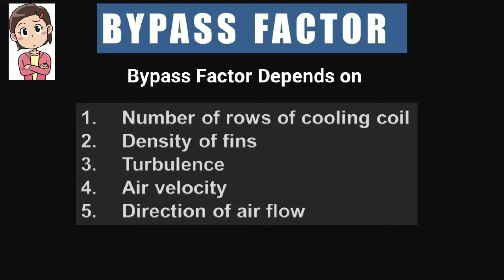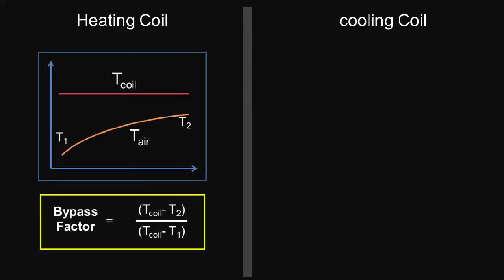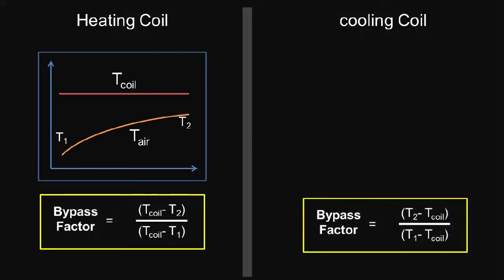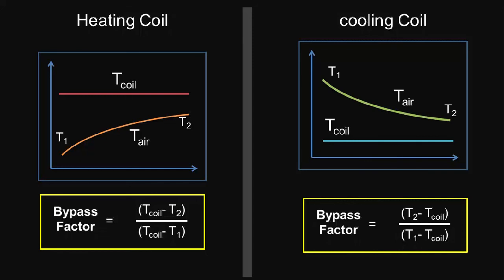Bypass factor also depends on the direction of air flow over the coils. The temperature distribution of air over a heating coil can be shown in the figure. Similar to the heating coil, the bypass factor for a cooling coil can be calculated using the formula: Bypass Factor = (T2 - T_coil) / (T1 - T_coil), or in other words, bypass factor equals the temperature of air leaving the coil minus temperature of coil, divided by temperature of entering air minus temperature of coil.